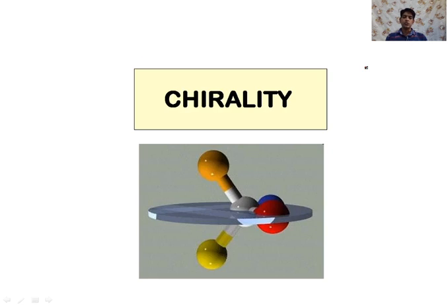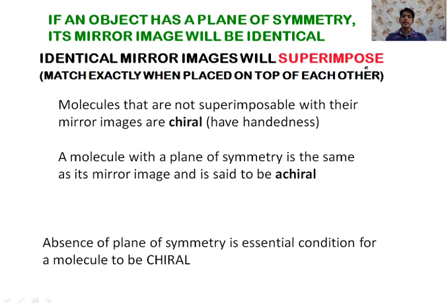After plane of symmetry, the next term is chirality. An object which has a plane of symmetry will be identical with its mirror image and will superimpose on its mirror image. Such objects are known as achiral. A simple definition: a molecule with a plane of symmetry is the same as its mirror image and is said to be achiral.